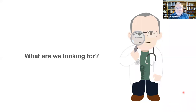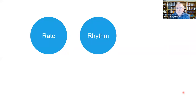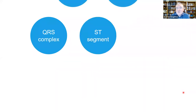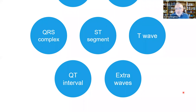When we're handed an ECG for interpretation, we should adopt a standard systematic approach that looks at each of the key components in turn. Taking this approach ensures we don't overlook anything of importance — essentially following a checklist. We begin with heart rate, then look at heart rhythm, axis, and then work through each component in sequence: P wave, PR interval, QRS complex, ST segment, T wave, QT interval, and finally any extra waves that may be present.